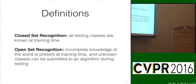A few definitions to be clear: closed set recognition means all testing classes are known at training time — this is the basic machine learning we all know and love. Open set recognition means incomplete knowledge of the world is present at training time, and unknown classes can be submitted to an algorithm during testing. This is the problem we want to solve.